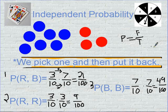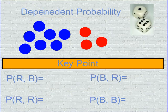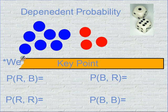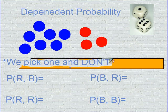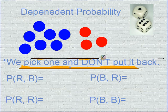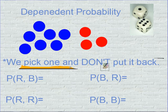Let's go on to dependent probability. Dependent probability is when we pick one and we don't put it back — stress on the 'don't.' We do not put it back.